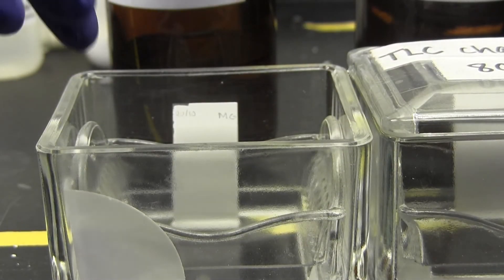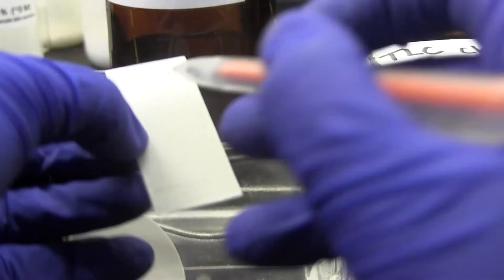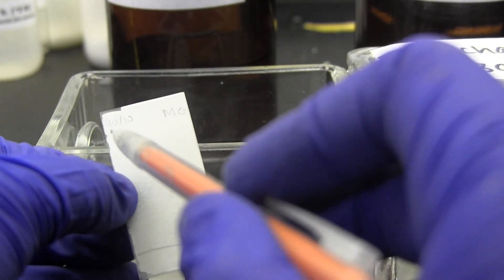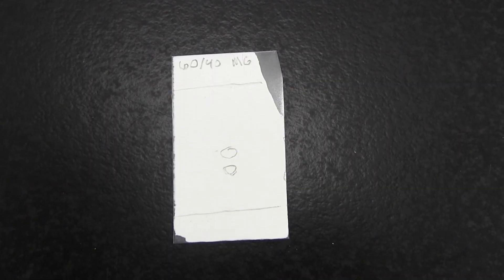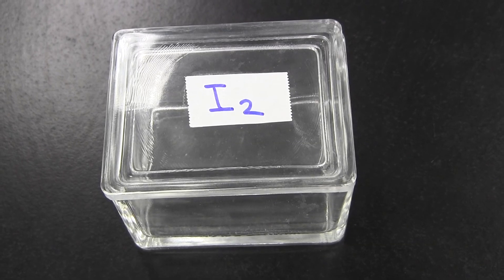Then, quickly remove your plate and draw a line using a pencil to mark the point that the solvent reached. Let the plate dry, then check it again under the UV light. Using a pencil, circle the visible dots. If you can't see your dots, use the I2 chamber.